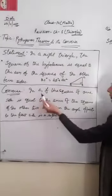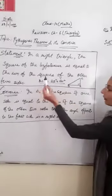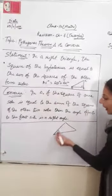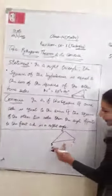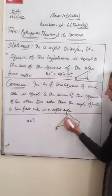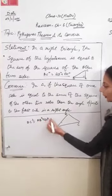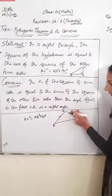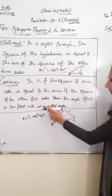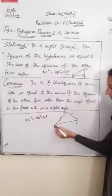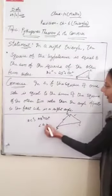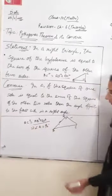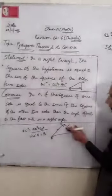Now let us see the converse. In a triangle ABC, if BC² is equal to the sum of the squares of the other two sides — that is, AB² + AC² — then the angle opposite to side BC, which is angle A, is equal to 90 degrees. This means the triangle is a right angle triangle.